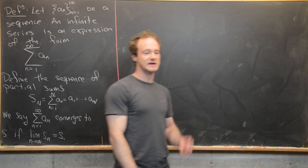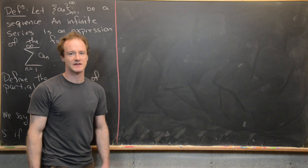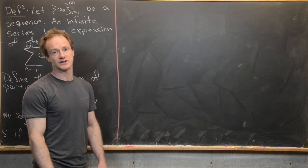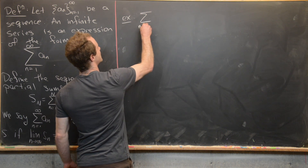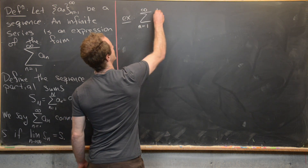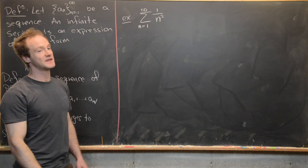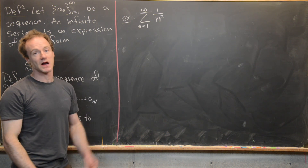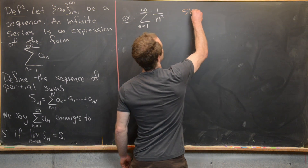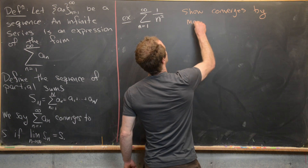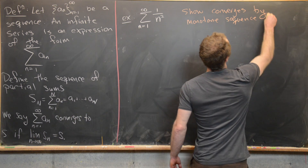I want to look at two examples: one of a series that we will show converges, although we will not find the sum, and another of a series that diverges. Our first example will be the sum as n goes from 1 to infinity of 1 over n squared, and we're going to show that this converges by the monotone sequence theorem.